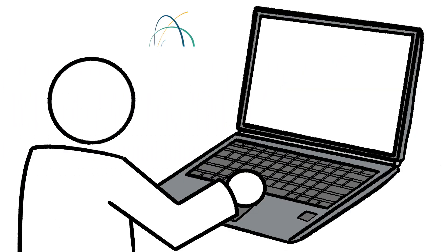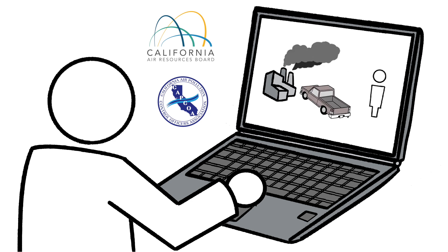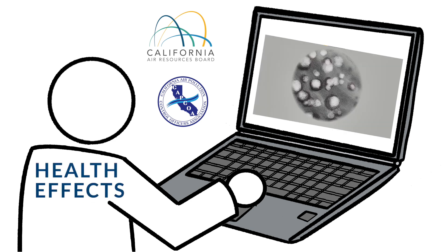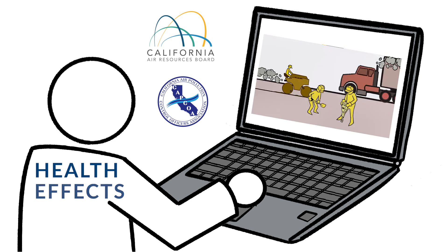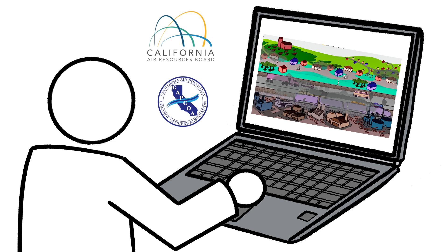The California Air Resources Board and California Air Pollution Control Officers Association have developed this video series to describe the air pollution life cycle and some of the ways that government agencies work to clean up the air. This includes videos on the health and environmental impacts of air pollutants, the sources of these pollutants, and strategies and programs to reduce harmful emissions.